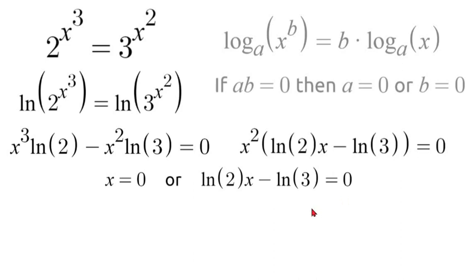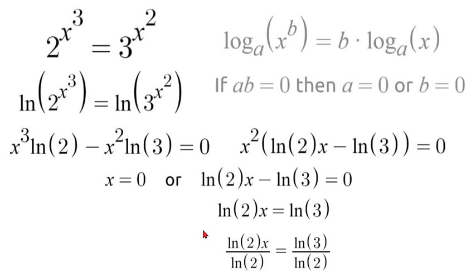In order to solve for this, the first thing we're going to do is add natural log of 3 to move it to the right side, and then we can divide by natural log of 2 on both sides, which will leave us with natural log of 3 over natural log of 2. This means our two possible answers for this equation are 0 and natural log of 3 over natural log of 2.